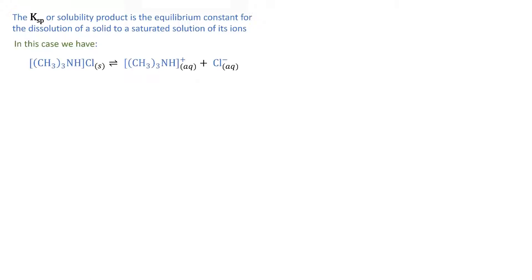To get a better understanding of the steps on the previous slide, let's visualize the scenario we're dealing with and expand upon the reasoning for each of the calculation steps. Firstly, we were asked to determine the Ksp of the solubility product. The Ksp is the equilibrium constant for the dissolution of a solid to a saturated solution of its ions. In this case, the equation for the dissolution of the trimethylammonium chloride is... To get a better understanding, it is good to visualize what is happening here.